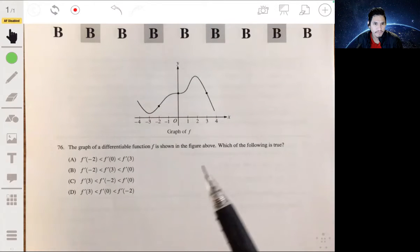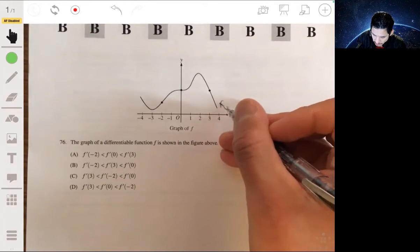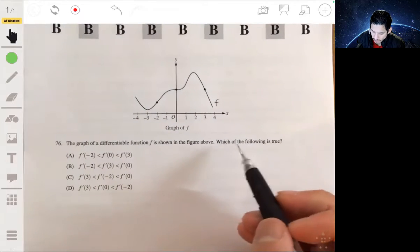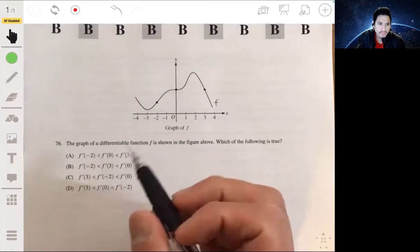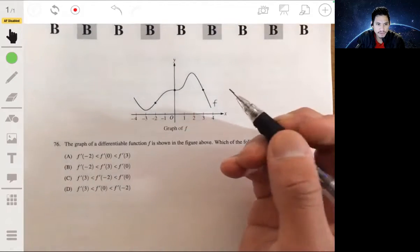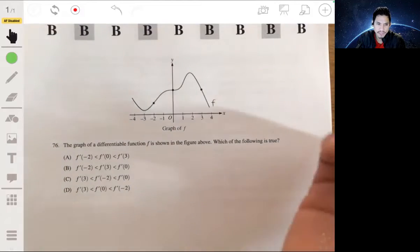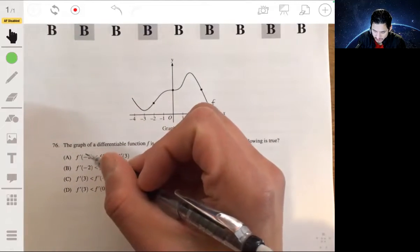All right, so in problem 76 we have the function f shown here and we want to figure out which of these are true. We have a comparison of the derivatives, so remember derivatives basically tell you the slope of the tangent line at specific points. Let's just draw sketches of what the tangent lines would be.